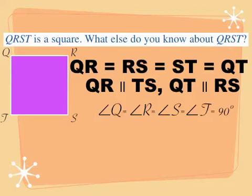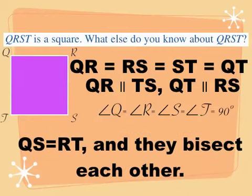Regarding the diagonals of the square: we can say diagonals QS and RT are equal. They bisect each other, and they are also perpendicular to each other — because the diagonals of a rhombus are perpendicular. So QS equals RT and they are the perpendicular bisectors of each other.